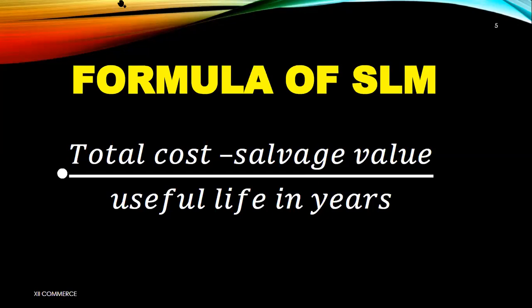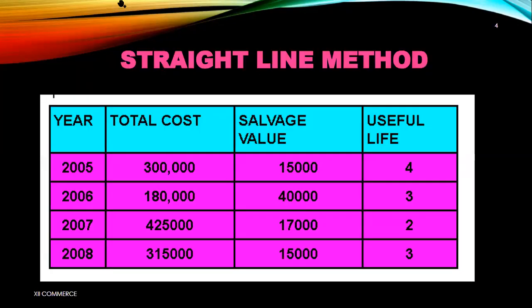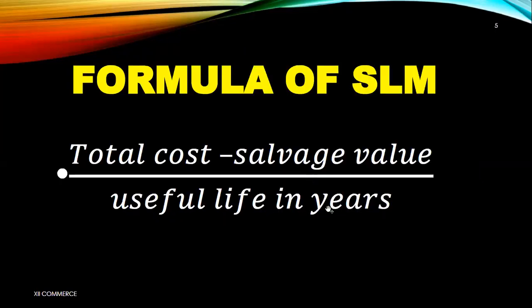Students, you need to find the straight line method depreciation. Please do the calculations in your accounting registers — this is a practice lecture over two days so you can become capable with these calculations. We apply the formula: total cost minus salvage value divided by useful life. For 2005, total cost is 300,000, salvage value is 15,000, and useful life is 4 years.